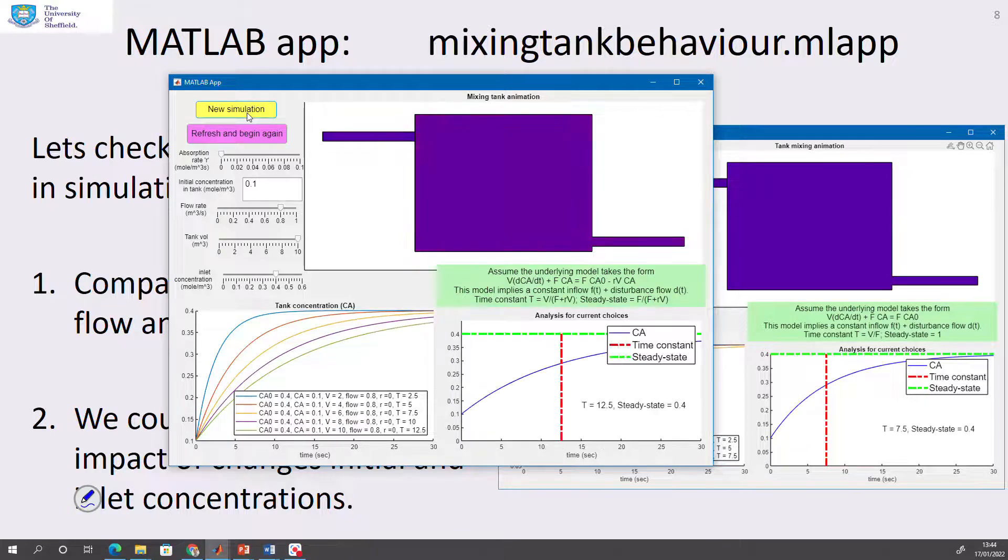And if you look in this bottom left hand figure, you can see here, as the volume goes from 2, 4, 6, 8, 10, what happens to the time constant? 2.5, 5, 7.5, 10, 12.5. But the key thing is for all of these, you get the same steady state. Let's go down to something like 6. We'll just leave it there for the tank volume. And now let's see what's the impact of flow rates.